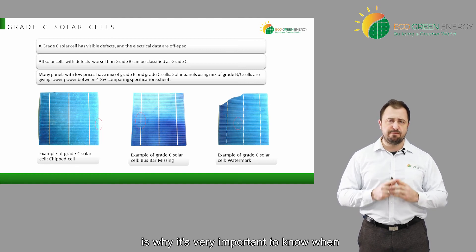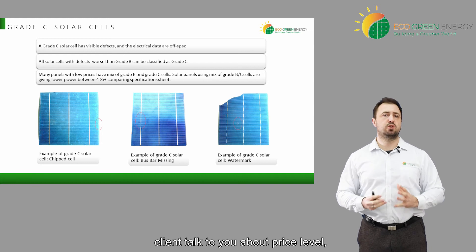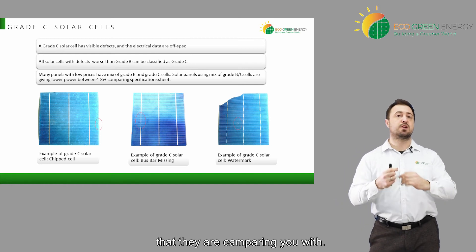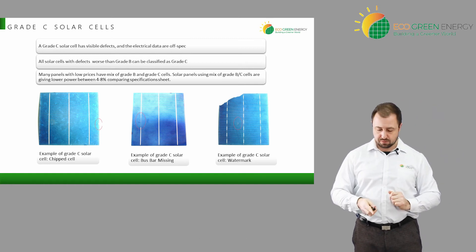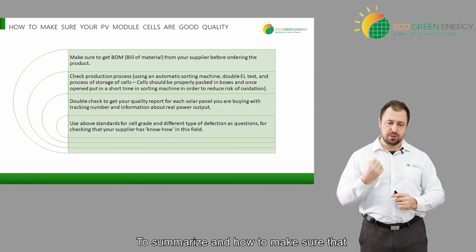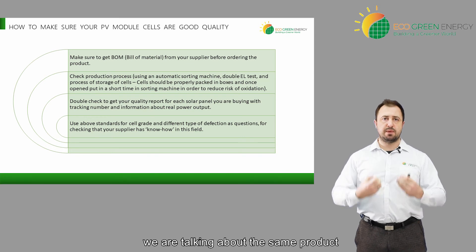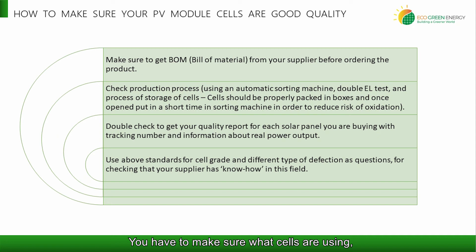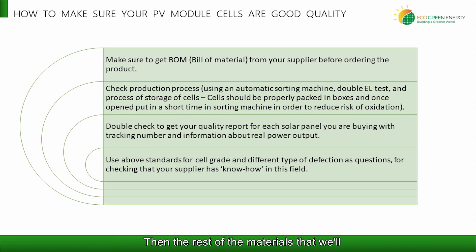This is why it's very important that when clients talk to you about price level, you are sure you know what kind of quality of cells have been used in the price they are comparing you with. To summarize and make sure we are talking about the same product at a grade A level: first, make sure of the BOM — the bill of materials. Make sure what cells they are using, what brand of cells, and whether they are grade A, grade B, or grade C.